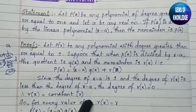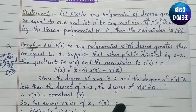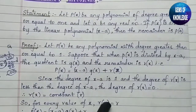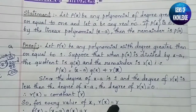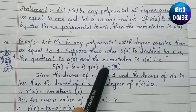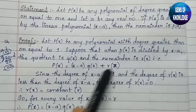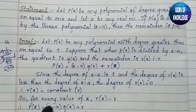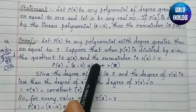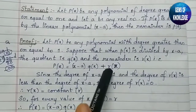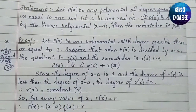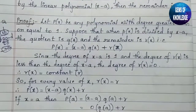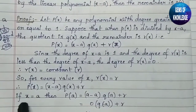So instead of writing r(x) we write r. Substituting into the formula, it becomes: p(x) = (x − a)·q(x) + r.